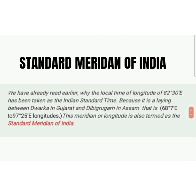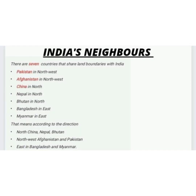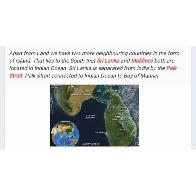Now we will study about India's neighbors. There are seven countries that share land boundaries with India: Pakistan in the northwest, Afghanistan in the northwest, China in the north, Nepal in the north, Bhutan in the north, Bangladesh in the east, and Myanmar in the east. So in the north it is China, Nepal, and Bhutan; in the northwest it is Afghanistan and Pakistan; and in the east it is Bangladesh and Myanmar.